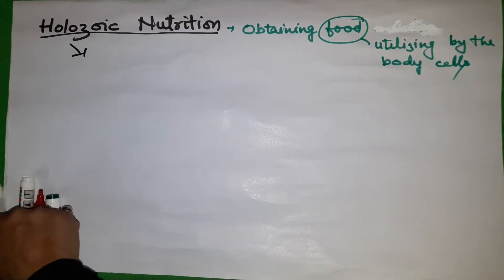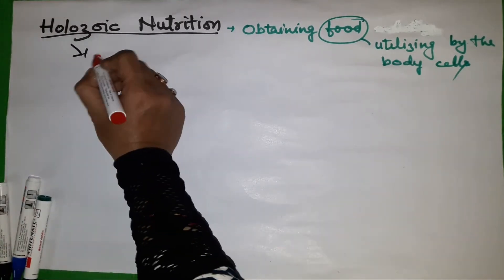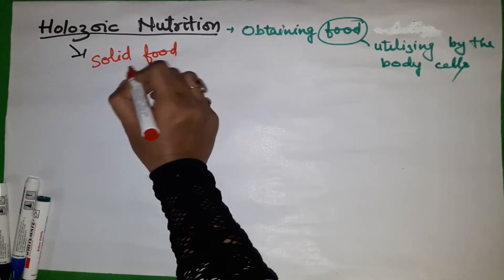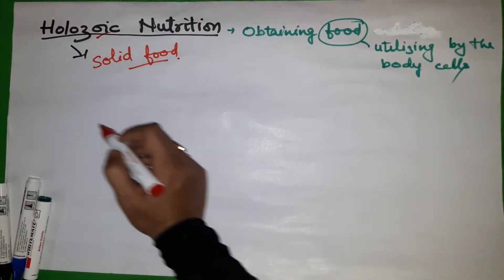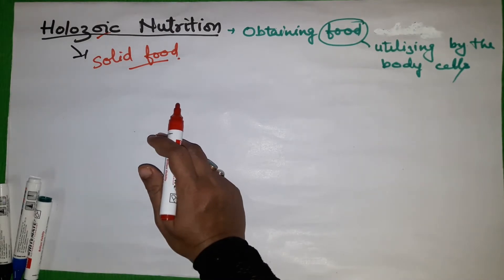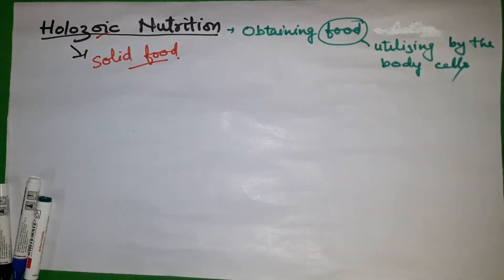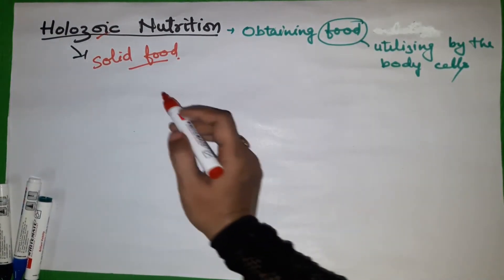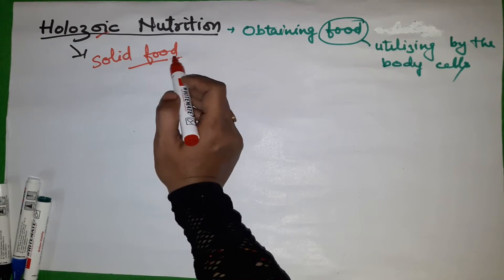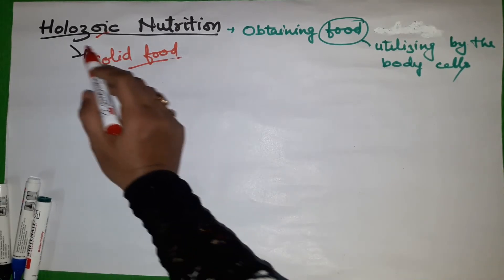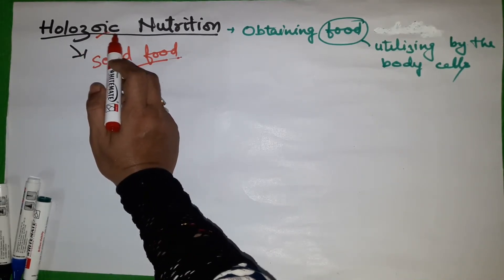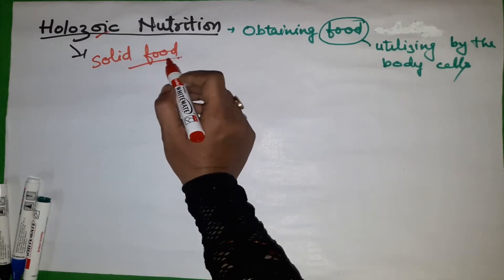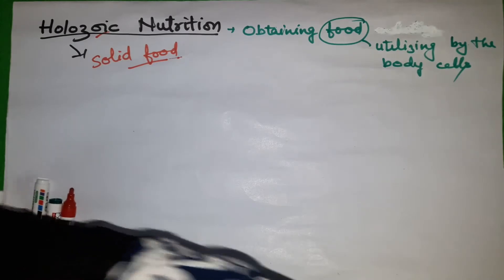Holozoic nutrition is the feeding with solid food materials. When we are feeding on solid food items, that is called holozoic nutrition. This type of nutrition is done by most animals. Human beings and animals are dependent on solid food items.